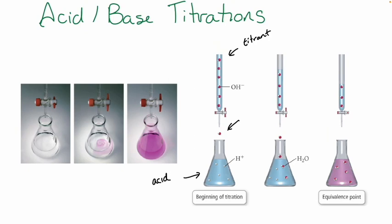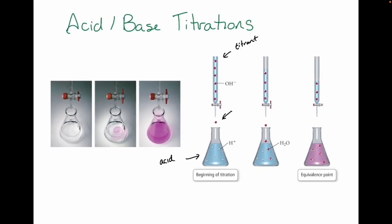You kept on adding and adding until your flask turned pink, and then you stopped. That end point — that color change in our titration — is what we call the equivalence point. The equivalence point means the moles of acid in your flask that you started with is now equal to the moles of base that you added. You added just enough base to react with all of that acid.